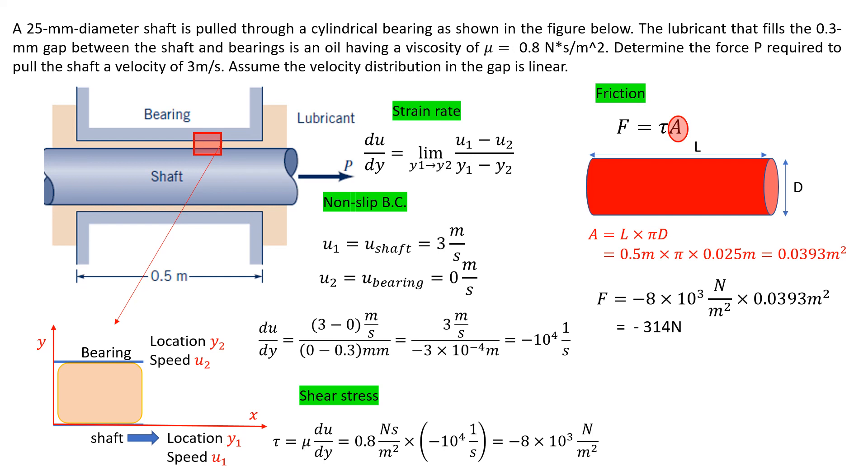The pulling force is used to counteract the friction force, so it's the negative of the friction force, leading to positive 340 newtons. The pulling force is along the same direction as the coordinate x we set up, and the magnitude is 340 newtons. The problem is solved.